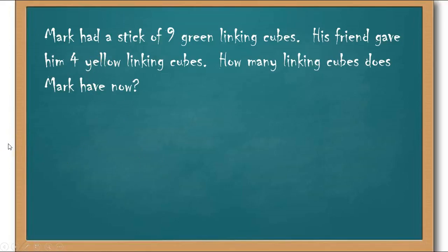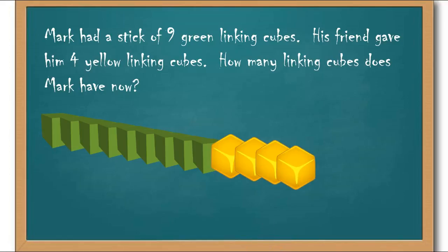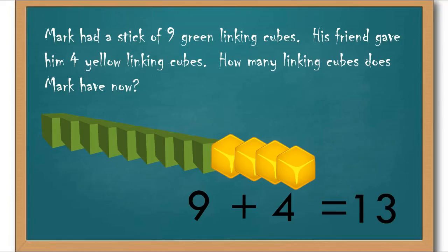Let's put up his nine green linking cubes: one, two, three, four, five, six, seven, eight, nine. And then he got four more from his friend — one, two, three, four. We can add all of these up, count them one by one, or write out our number sentence. Nine green linking cubes plus four more. Did you say 13? Excellent job.